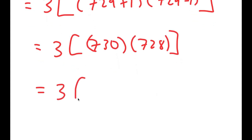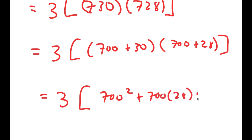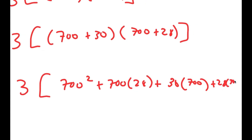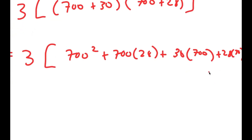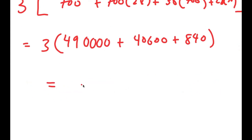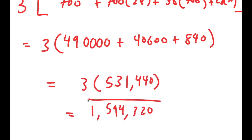So this is equal to 3 times 730 times 728. I'm going to rewrite this as 3 times (700 plus 30) times (700 plus 28). Expanding: 3 times (700 squared plus 700 times 28 plus 30 times 700 plus 28 times 30), which equals 3 times (490,000 plus 40,600 plus 840), which equals 3 times 531,440, which equals 1,594,320. So this is my answer.